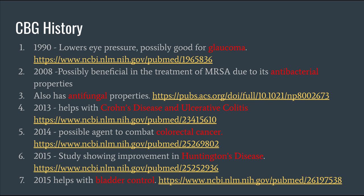A brief history of CBG from 1990 to 2015: animal studies have shown it may help with glaucoma, has antibacterial and antifungal properties, and may improve inflammatory bowel diseases like Crohn's disease and colitis. A 2013–2014 study showed it may combat colorectal cancer by inhibiting cancer-proliferating cells in colon cancer. In 2015, a mice model showed improvement in Huntington's disease, and another 2015 study discussed possible help with bladder control.